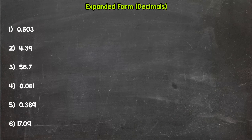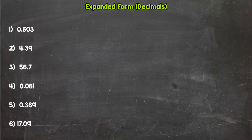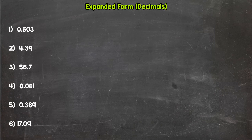Expanded form for decimals is very similar to expanded form for whole numbers — you're expanding the number out to show the value of each digit. With decimals, you can use both fractions and decimals to represent a number less than a whole. I'll even have a video for how to represent tenths, hundredths, and thousandths as fractions if you need extra help.